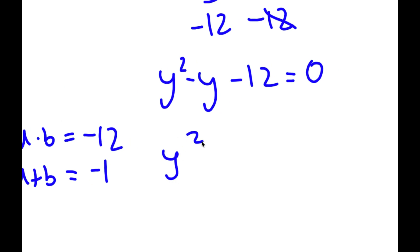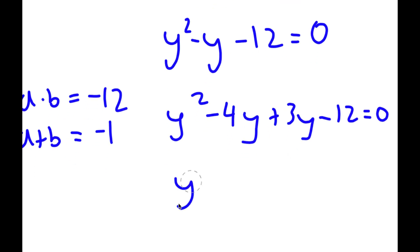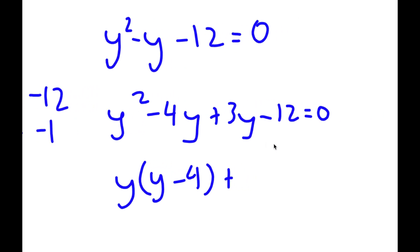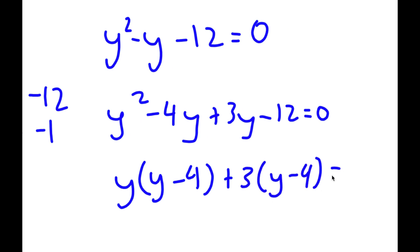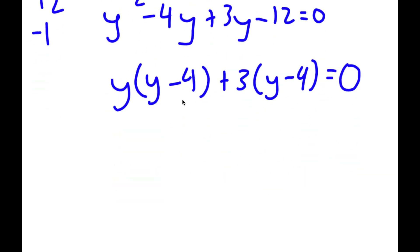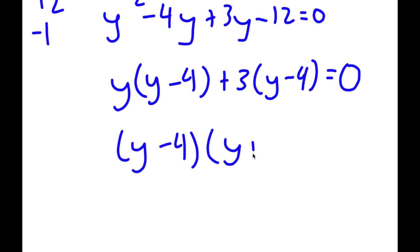So now I have y squared minus 4y plus 3y minus 12 is equal to 0. Factoring out y from y squared minus 4y gives y times y minus 4, and the greatest common factor of 3y minus 12 is 3, giving 3 times y minus 4 equals 0. Factoring out y minus 4, I get y minus 4 times y plus 3 is equal to 0.